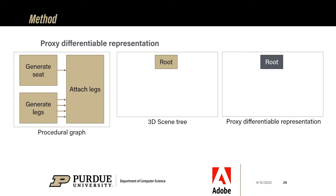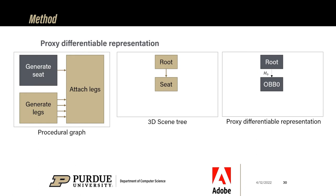Here is an example of how our system works. On the left we have our procedural graph, which upon execution generates: first, the 3D model scene tree; and second, the proxy differentiable representation of the model, which is a copy of the scene tree with objects substituted by oriented bounding boxes. These oriented bounding boxes are made differentiable using a differentiable type. For those unfamiliar with auto-differentiation, it is implemented as a type in programming language like float or double, except that it tracks all operations made and you can efficiently compute the derivatives afterwards — it is the basis of deep learning frameworks like TensorFlow and PyTorch.